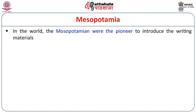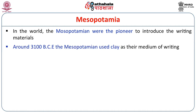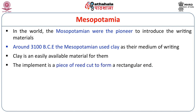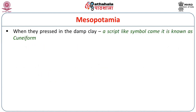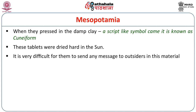In the world, the Mesopotamians were the pioneers to introduce writing materials. Around 3100 BCE, the Mesopotamians used clay as a medium of writing. Clay was an easily available material for them. An important tool was a piece of reed cut to form a rectangular end. These two ingredients defined the script. The letters were wedge-shaped, known as cuneiform letters. When pressed into damp clay, a script-like symbol appeared. These tablets were then dried hard in the sun.